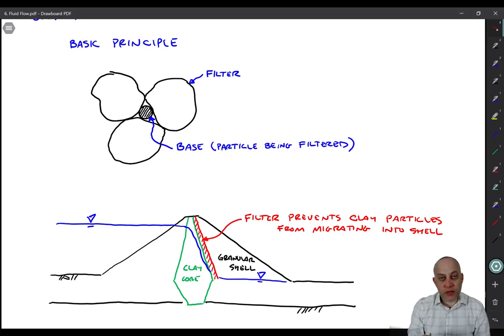But we don't do that. We base it on the size of the particles of the filter, which is a pretty good proxy for the size of the voids.